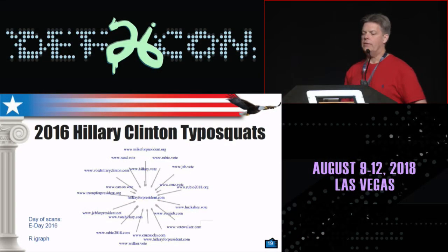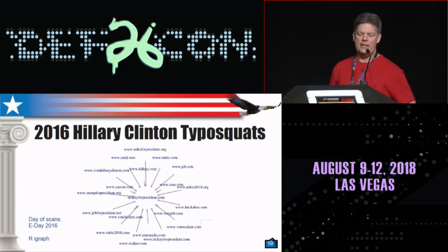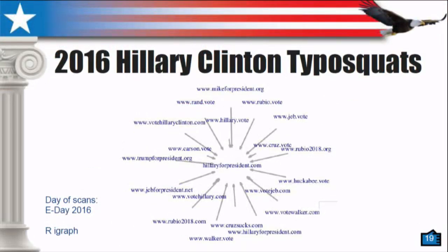This is the output from our Election Buster application — it's a directed graph representation. At the center here you can see Hillary's main site, hillaryforpresident.com. This is data we gathered on Election Day of 2016. I took that data and put it into R — there's an iGraph package in R that's good for network diagrams. Some of the nodes around it are Jeb for President, Rubio 2018, walker.vote, and — Cruz sucks. What you can see is how she is squatting on the domain names of several of her competitors, which is a common practice, certainly not illegal.